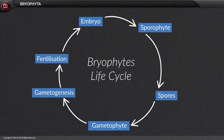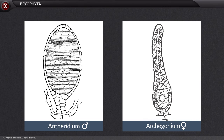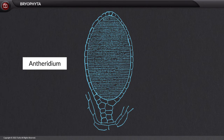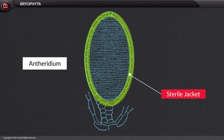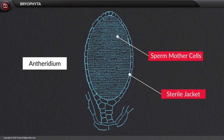The gametophytic body of a bryophyte bears the male and female sex organs called the antheridium and archegonium respectively. The antheridium is racket-shaped, protected by a sterile jacket, and encloses sperm mother cells.